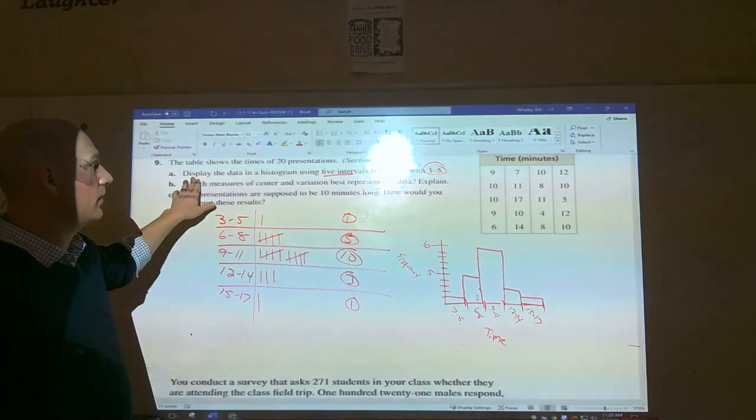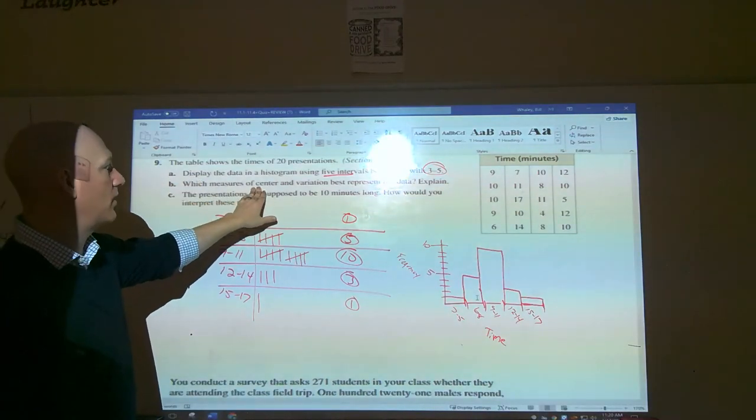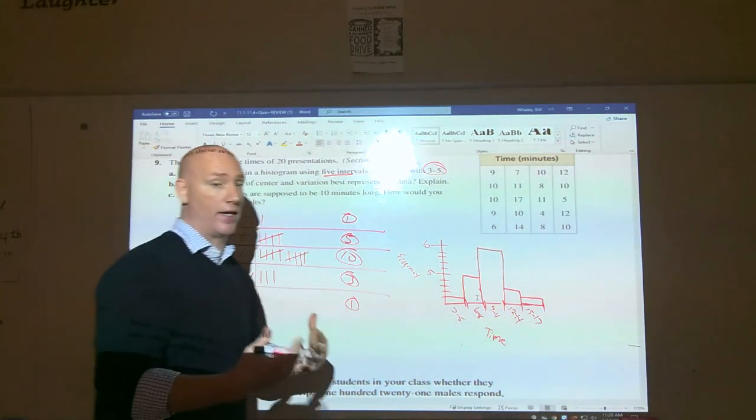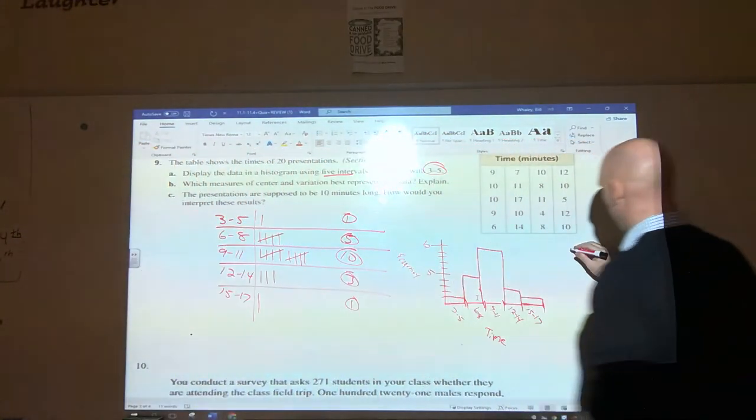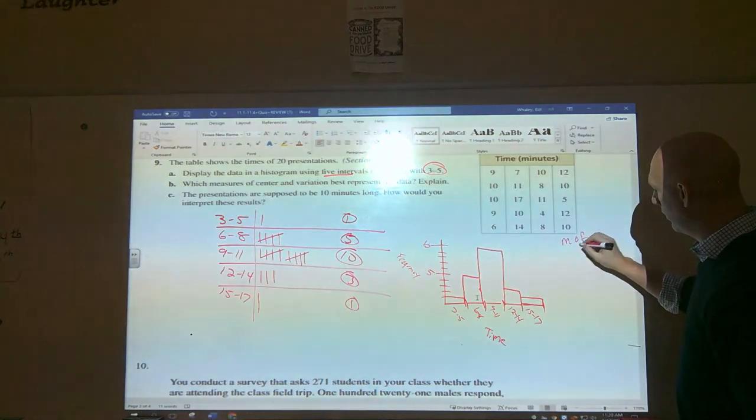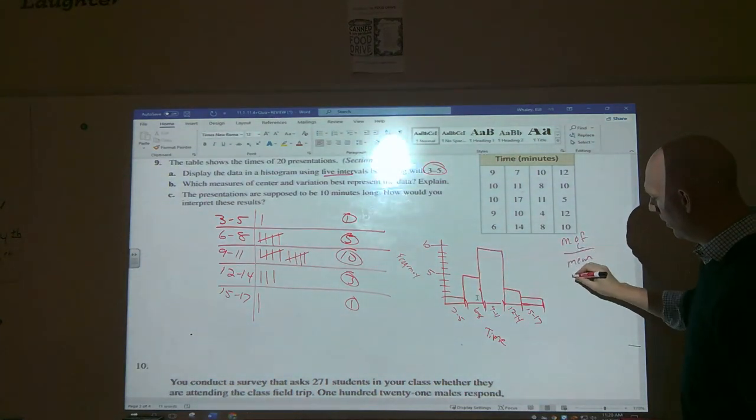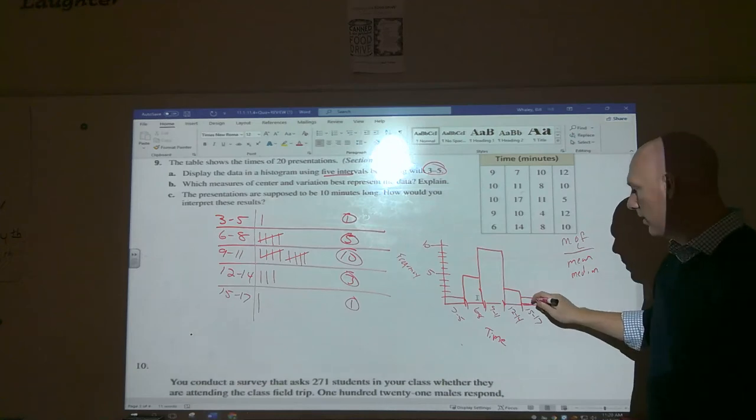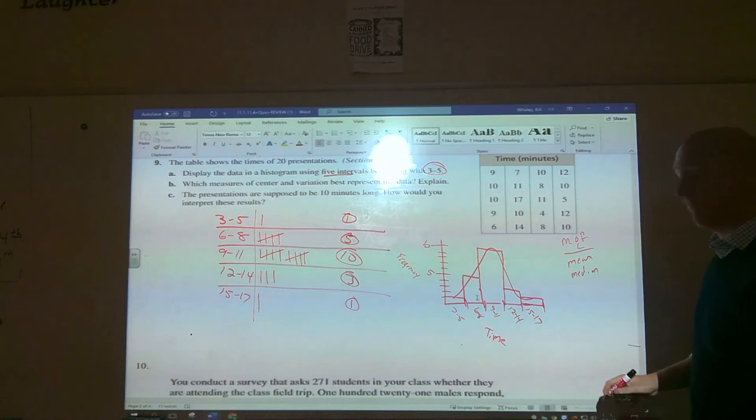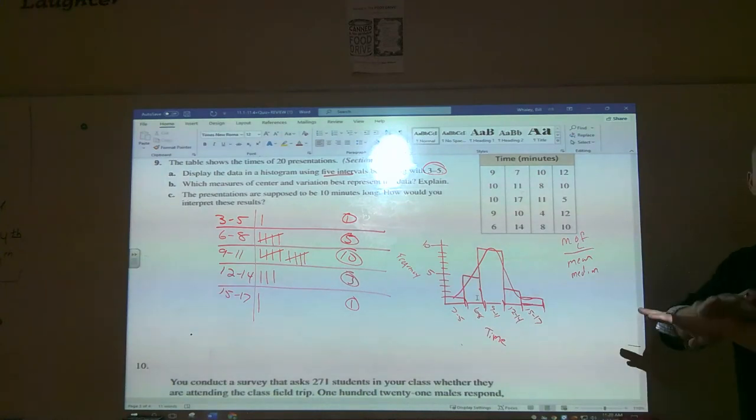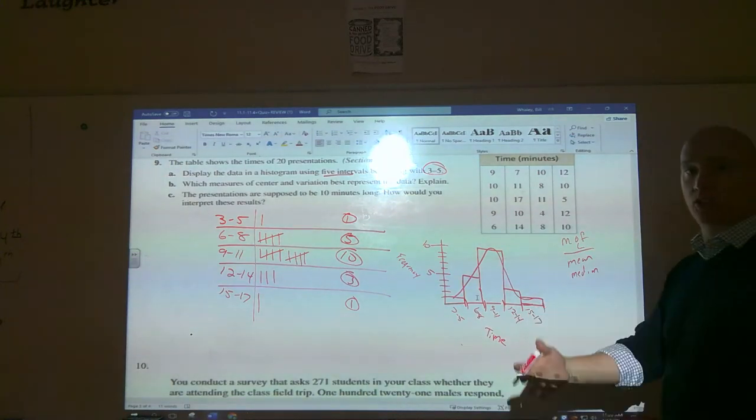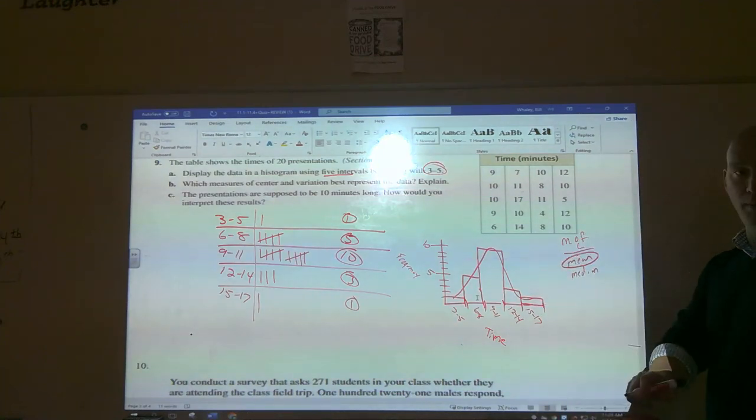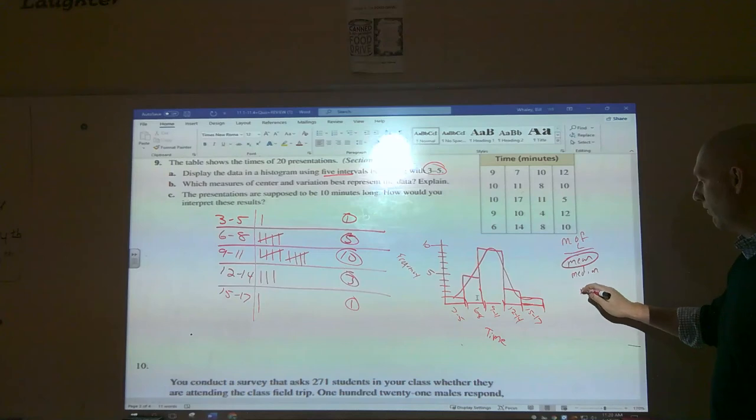Okay, we displayed it. Which measure of center and variation best represents the data? This you have to remember: outliers. For measures of center it's mean then median unless there's an outlier. This is symmetric. If it's symmetric it means no outliers. If it's skewed there is an outlier. It's symmetric, no outliers, you go with mean.